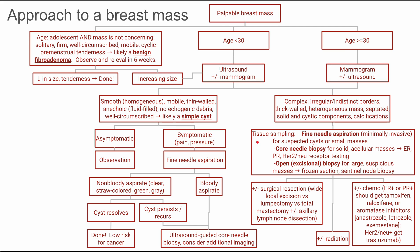Once you've done your tissue sampling, you can consider different treatments. You might consider surgical resection: wide local excision versus lumpectomy, or total mastectomy — and you can remove lymph nodes if they contain spreading of the mass. You can also consider radiation, and lastly chemotherapy. Different types based on receptor testing: if estrogen receptor or progesterone receptor positive, use tamoxifen or raloxifene, which are selective estrogen receptor modifiers, or aromatase inhibitors like anastrozole or letrozole. If HER2-nu positive, the patient gets the monoclonal antibody trastuzumab.